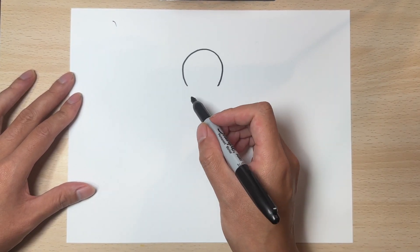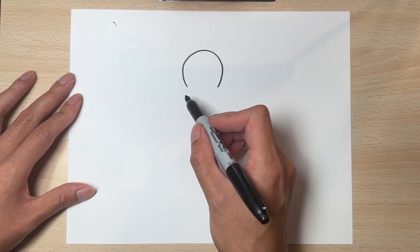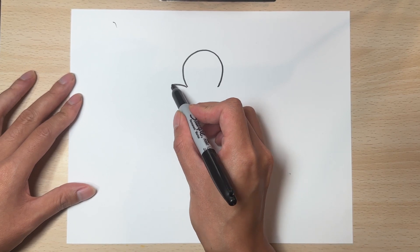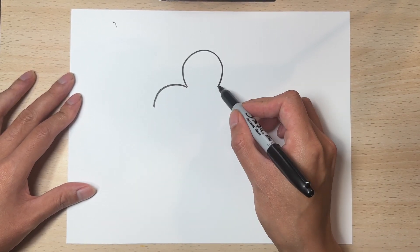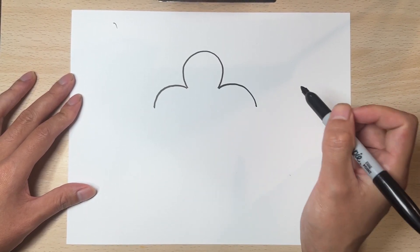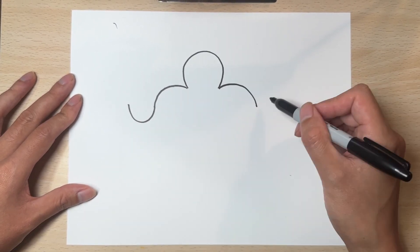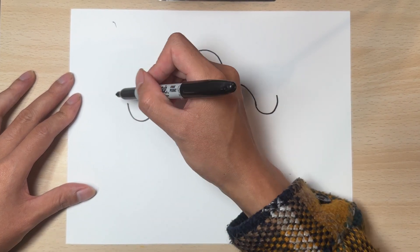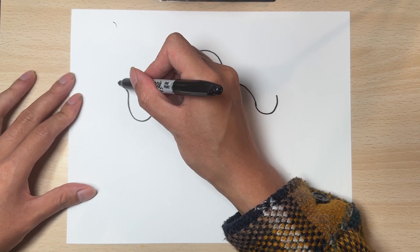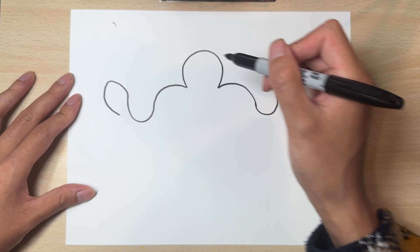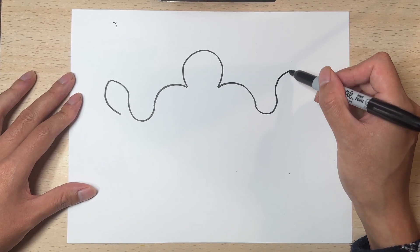Once you have that done we just need to draw the shoulders in. Let's do one curve on either side for the shoulders and let's wiggle up and let's give it a big round palm like so.